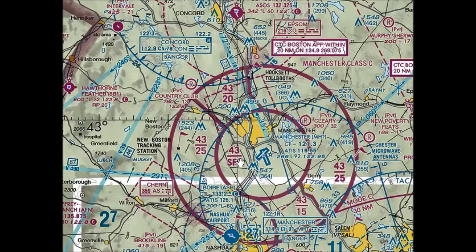The center core goes from the surface to 4,300 feet MSL. The base of the shelf varies depending on where you are around the core center of the airport. In here it starts out at 2,500 feet MSL, 2,000 feet MSL, back to 2,500 feet MSL, and down to 1,500 feet MSL.